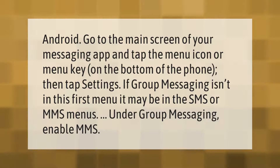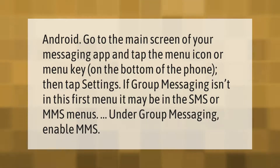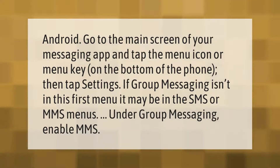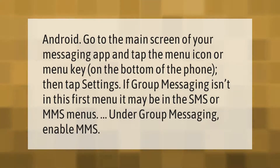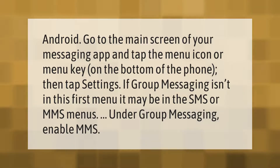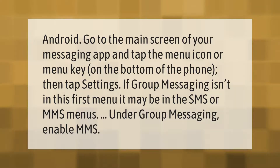Go to the main screen of your messaging app and tap the menu icon or menu key at the bottom of the phone, then tap Settings. If group messaging isn't in this first menu, it may be in the SMS or MMS menus. Under group messaging, enable MMS.